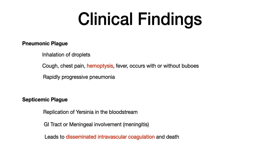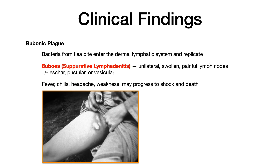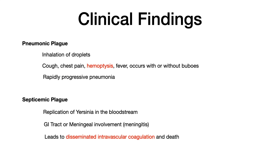Septicemic means the Yersinia is replicating in the bloodstream. This leads to involvement of the GI tract or meningitis as it spreads to other organ systems. On your exam, the test writer will tell you it has progressed to disseminated intravascular coagulation (DIC), and if left untreated this almost always results in death. Look for lab markers for DIC. To summarize: bubonic is buboes and lymph nodes; pneumonic is lungs, hemoptysis, and pneumonia; septicemic is meningitis, GI symptoms, and DIC.